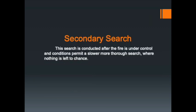The secondary search occurs once the fire is under control. We slow things down and go through every part of the building thoroughly — checking corners, behind dressers, behind the bed, all those little spots. The primary search covers where a victim most likely would be; the secondary search covers everywhere else. You have considerably more time during the secondary search compared to the rapid primary search.